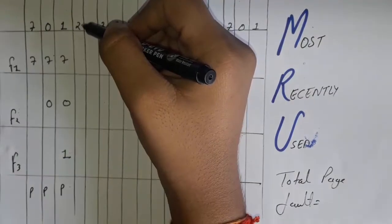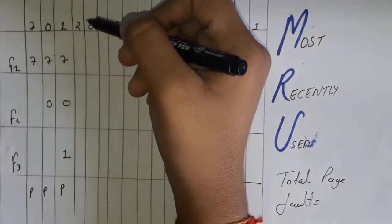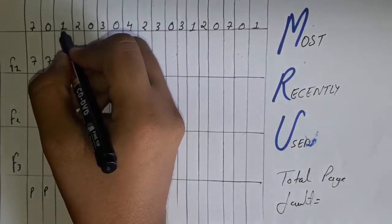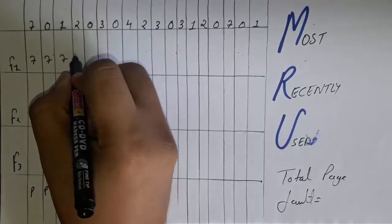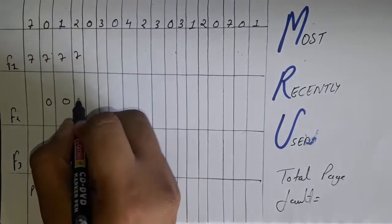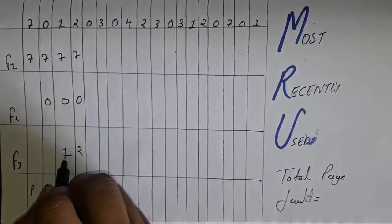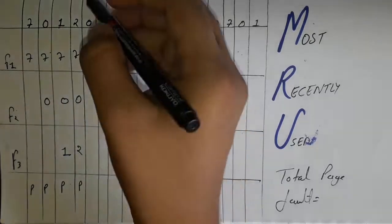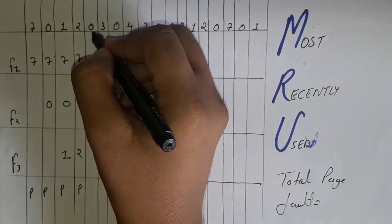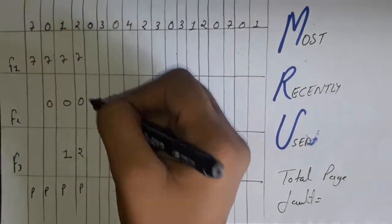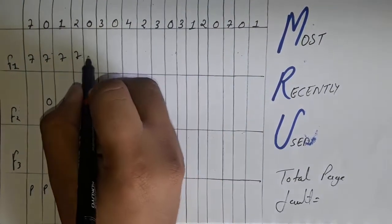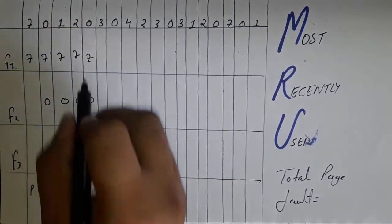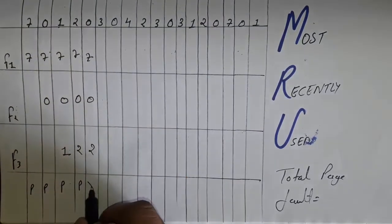Now a new page arrives. We have just used page 1, so we have to remove it. Write 7, 0, 2 — we have removed 1 and written 2, so that's P. Now page 0 arrives and 0 is already in our list, so there is no page fault — write a cross.